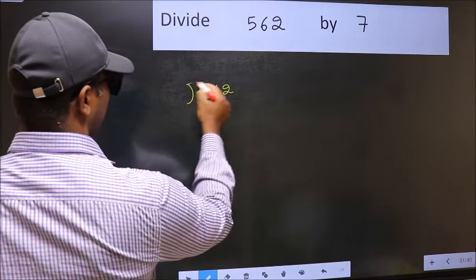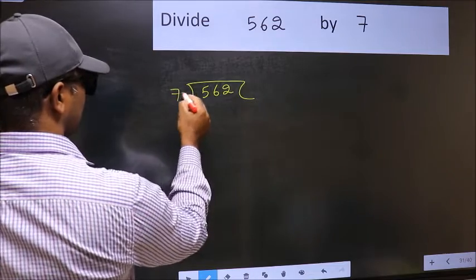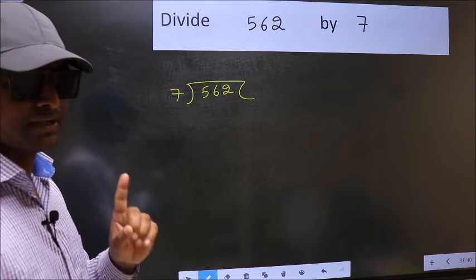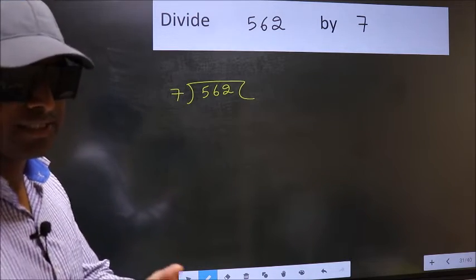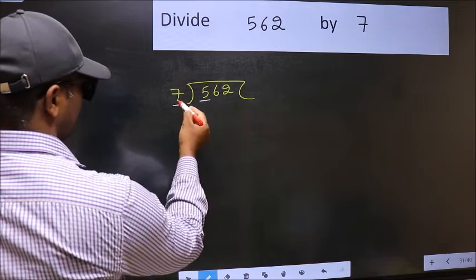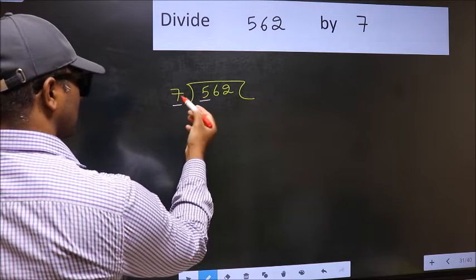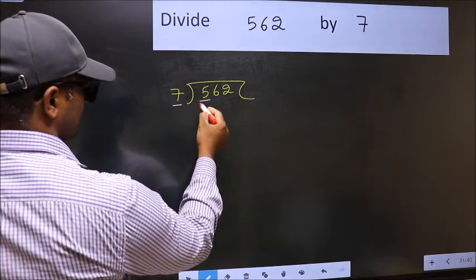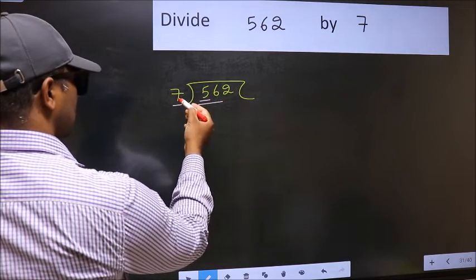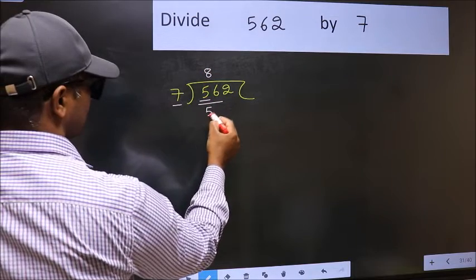562 and 7 here. This is your step 1. Next, here we have 5 and here 7. 5 is smaller than 7, so we should take two numbers, 56. When do we get 56 in 7 table? 7 times 8 is 56.